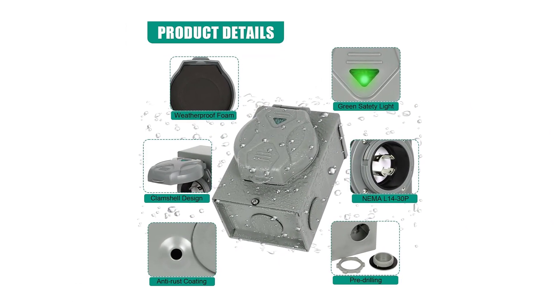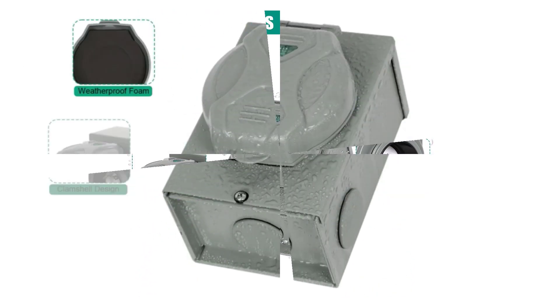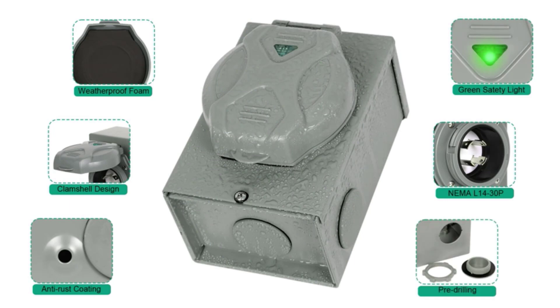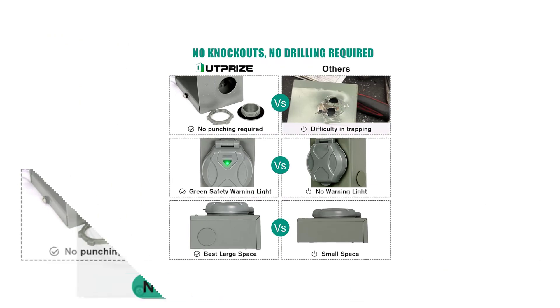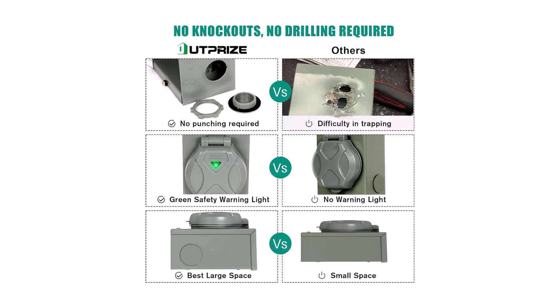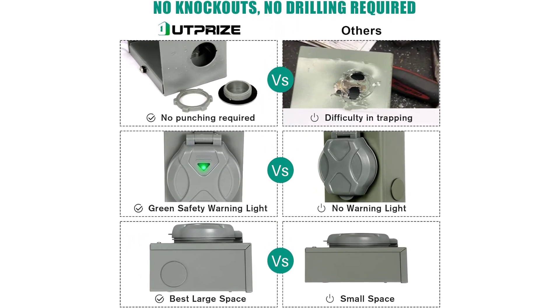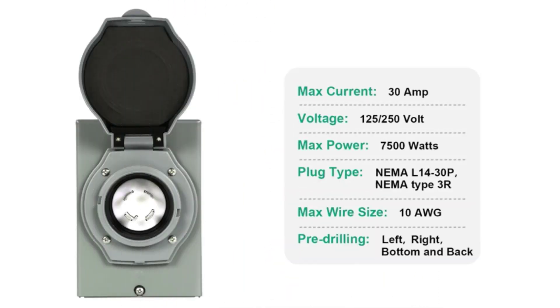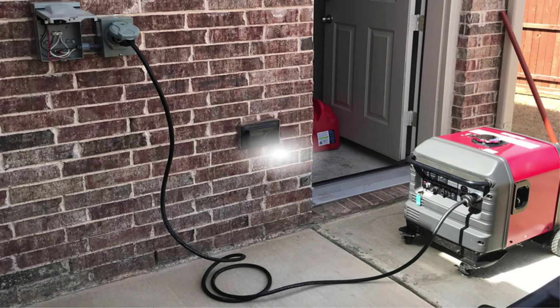The pre-drilled design with removable covers allows for easy installation without the need for drilling. With a reliable NEMA L1430P four-prong plug and the ability to handle up to 7,500 W and 30 Amps, this inlet box ensures enhanced safety. The flip cover features a clear green indicator to easily verify the correct power connection. With a one-year warranty, the Outprise Inlet Box is a reliable choice for your outdoor power needs.